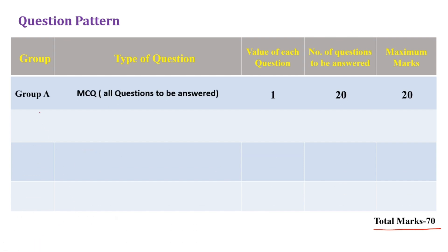First is Group A, which contains MCQ — multiple choice questions. The total number of questions is 20, each carrying one mark. The maximum mark for Group A is 20. There is no negative marking.